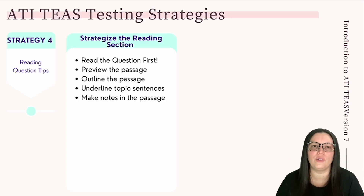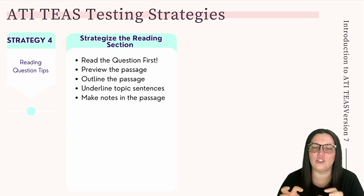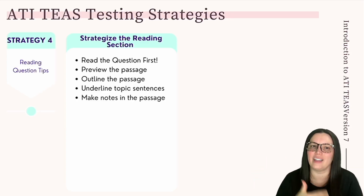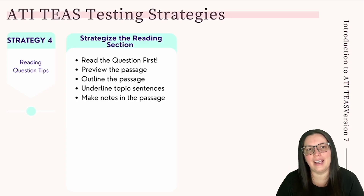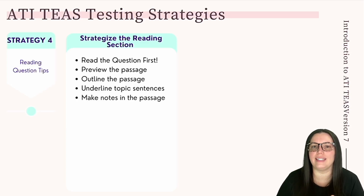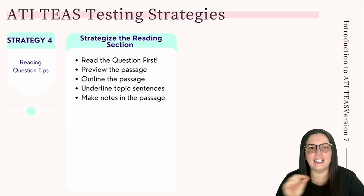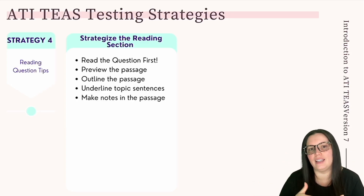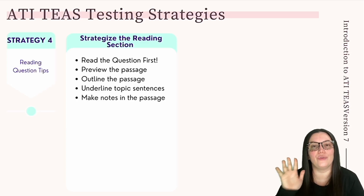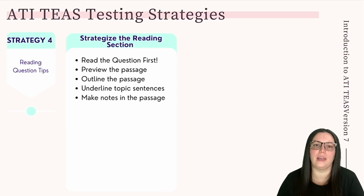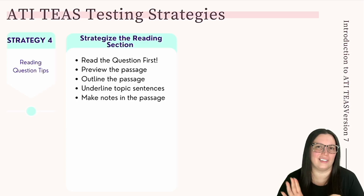Number two: preview the text before delving into the reading by summarizing key terms and definitions. Number three: outline the passage using a separate sheet of paper to internalize the material as you read. Number four: underline topic sentences — this will help you focus on what you are reading and identify key concepts to revisit as you work through the questions. Number five: make notes on a scratch piece of paper for vocabulary words, key concepts, and comments.